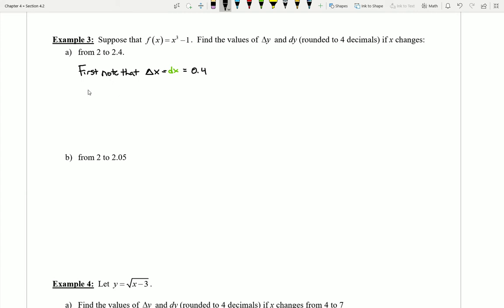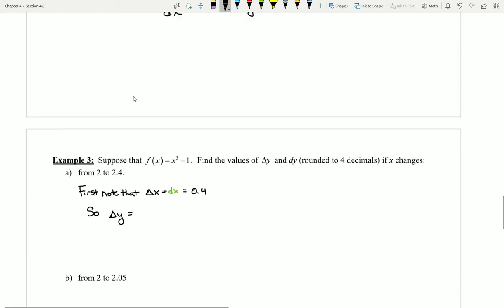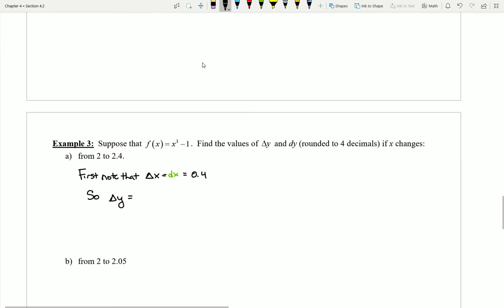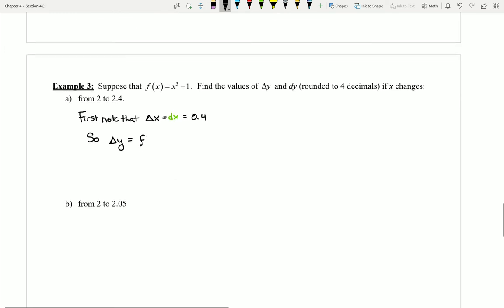Well then computing delta y becomes very easy. Delta y is just how much did my y value go up in my function. That should be easy to determine because I can just calculate what the y value is at the last point, figure out where we started, and then find the difference.